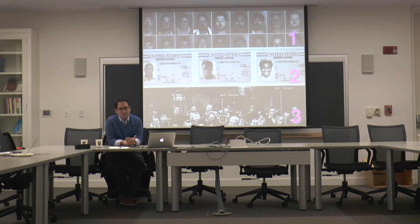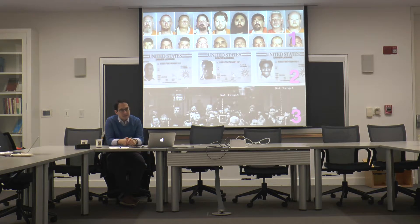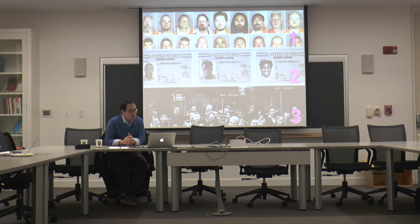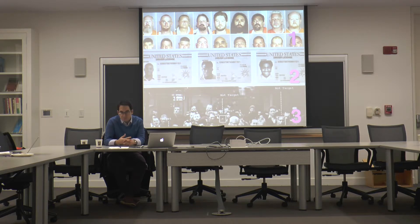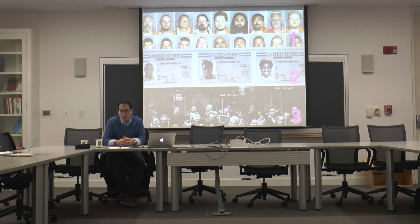Probably the most common kind of back-end database are mugshot databases — individuals who have made contact with the criminal justice system. While you're still dealing with millions of people, it's not millions of entirely law-abiding people. These databases do have flaws: many people are arrested who are never charged with a crime, and many who are charged are found innocent or have charges dropped.